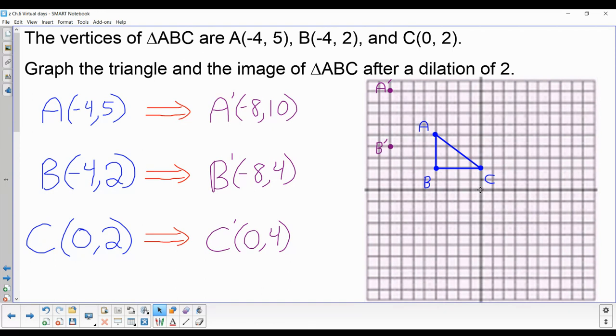The image of point C is at (0, 4). So I go 0 right or left, I go up 4, and I graph the point right there. Once you have the three points, you connect the dots, and you have the image of triangle ABC.